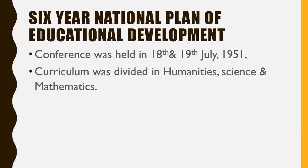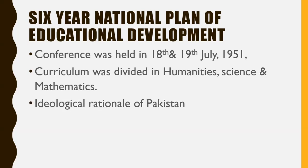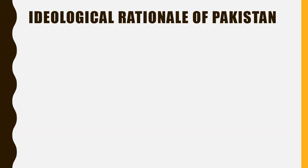In Pakistan, this six-year plan focused on a curriculum divided into humanities and mathematics. The purpose was to include world history, Islamic history, and elementary civics, and to design the curriculum around the needs of each individual. The plan emphasized that the foundations of education — psychological, sociological, and philosophical — should be central to curriculum design.